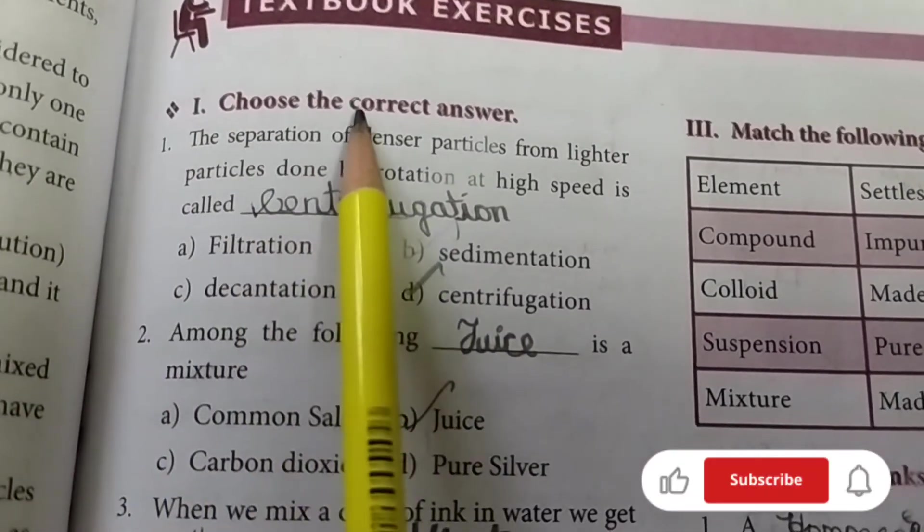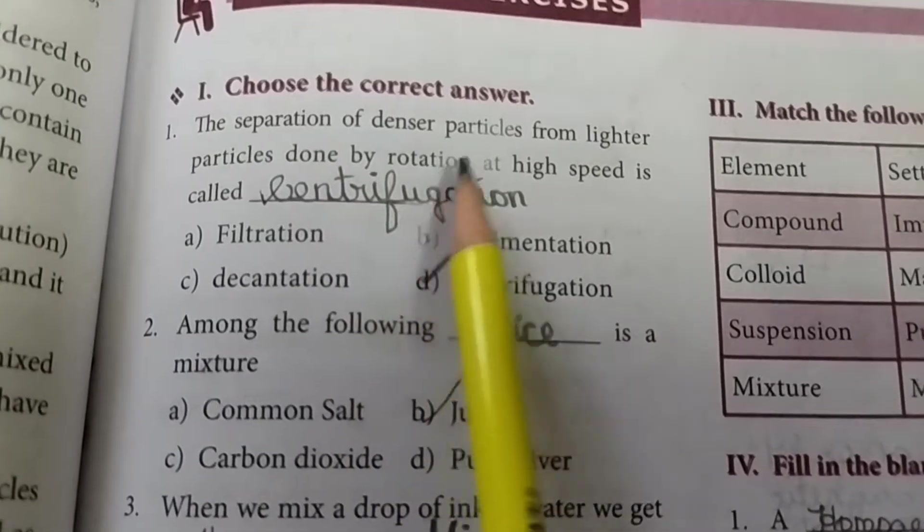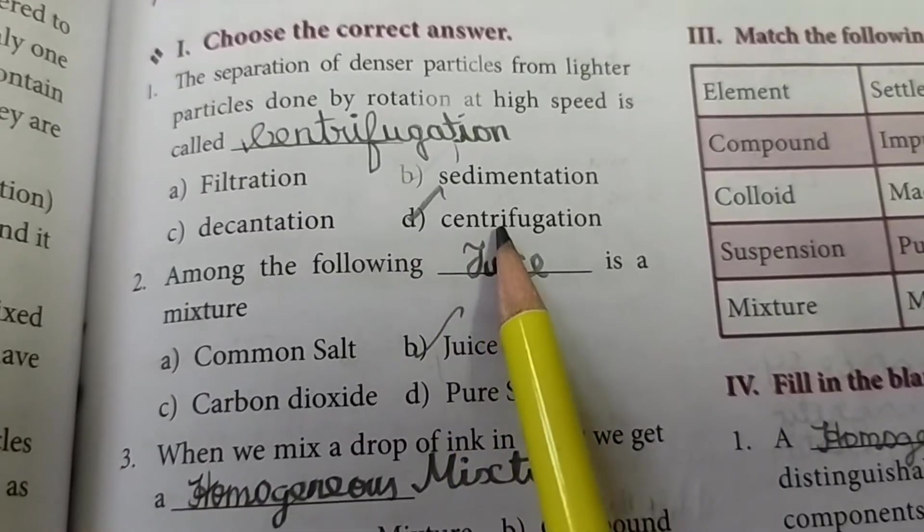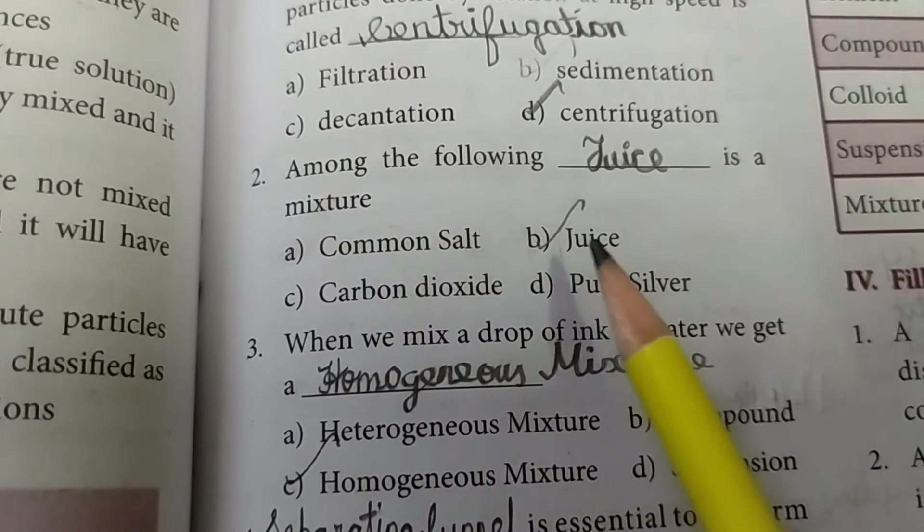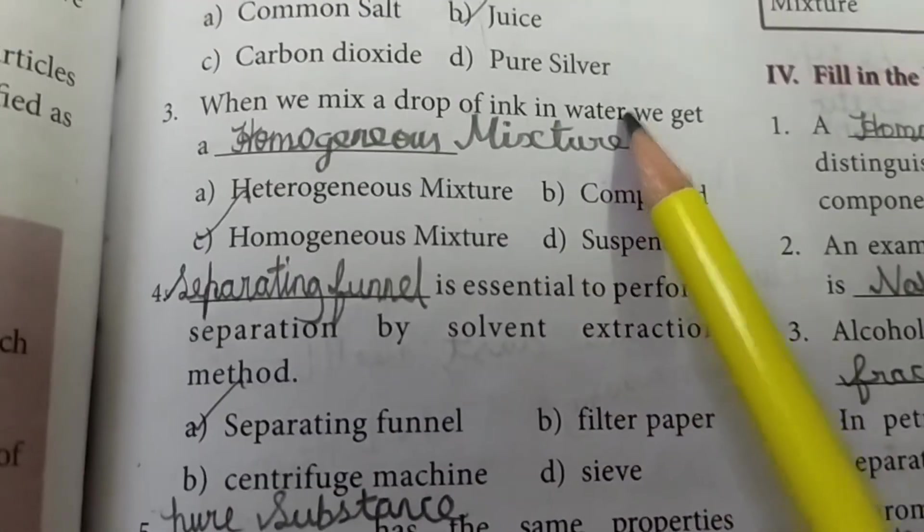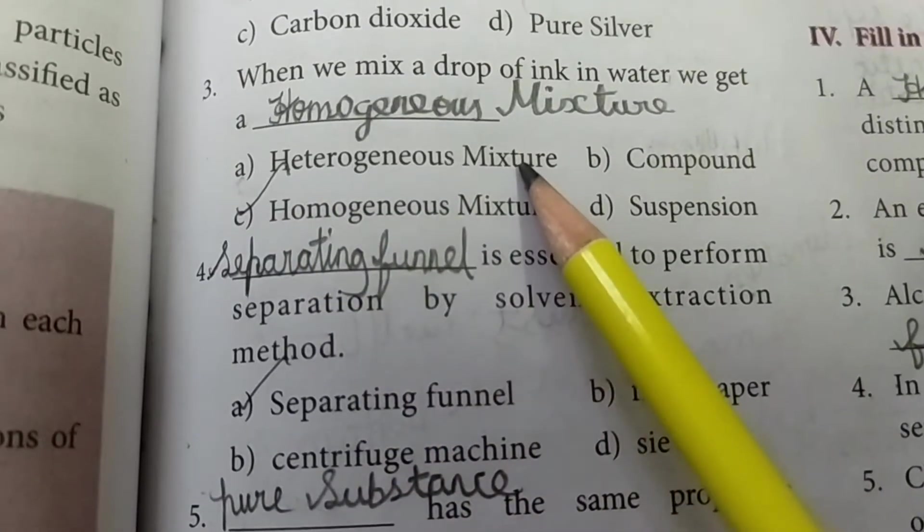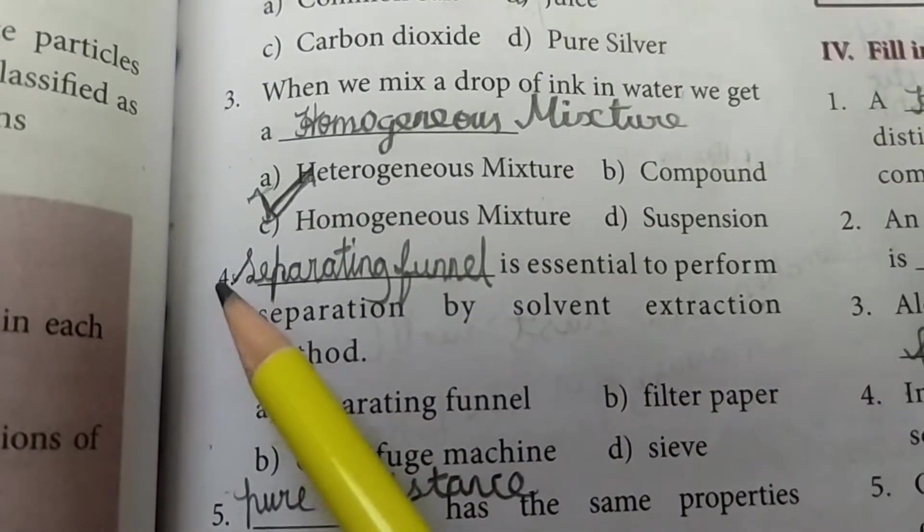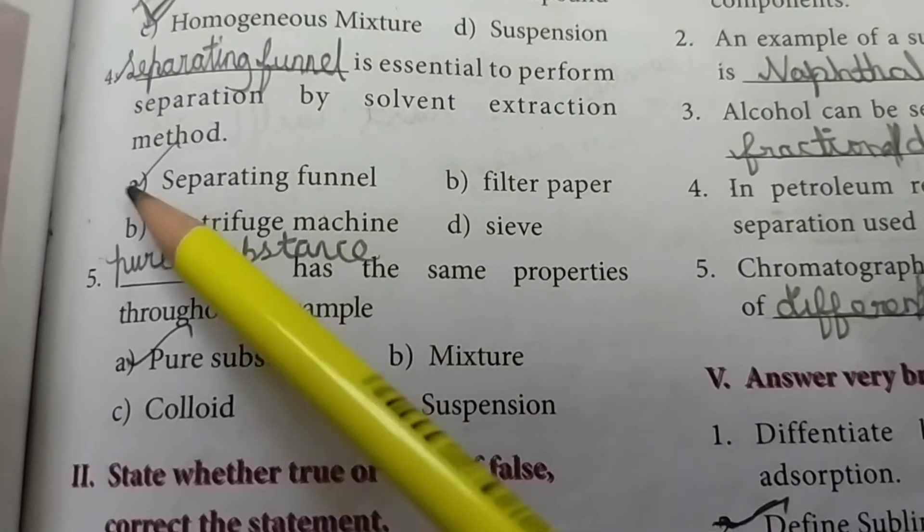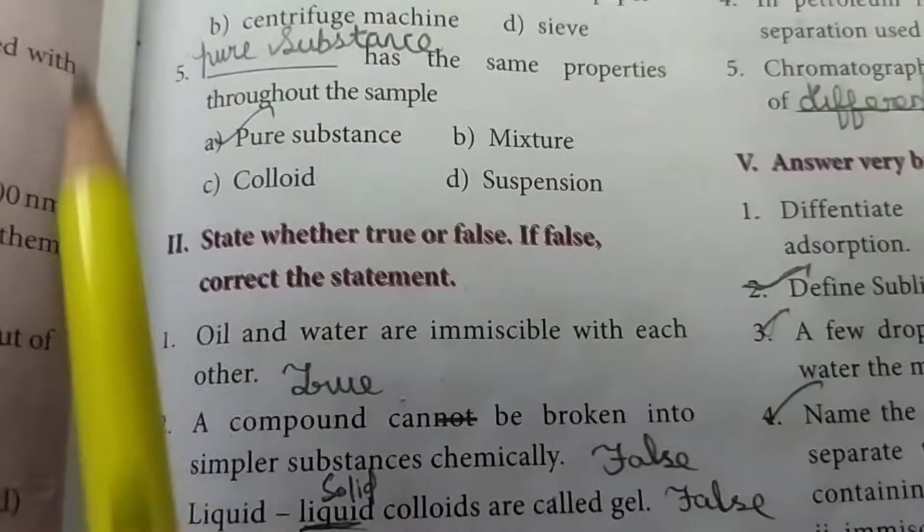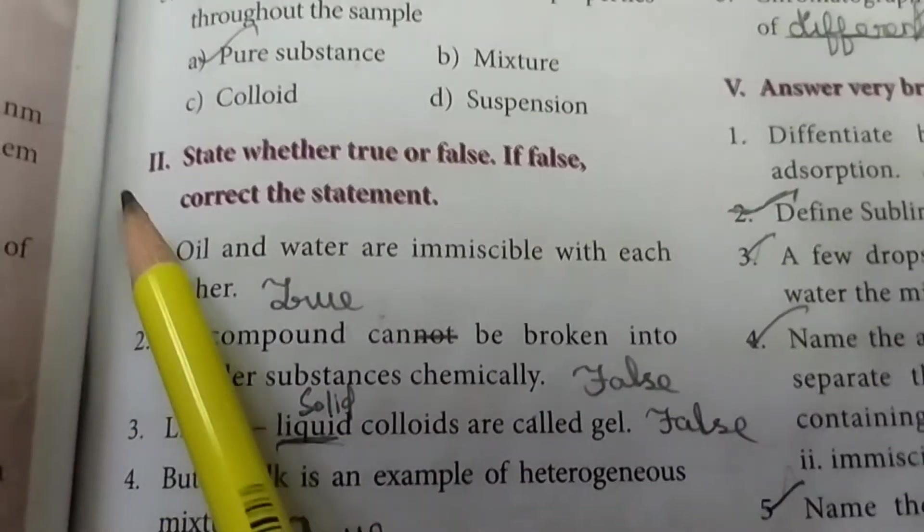First, choose the correct answer. Number 1: The separation of denser particles from lighter particles done by rotation at high speed is called centrifugation. Second, among the following, juice is a mixture. Third, when we mix a drop of ink in water we get a homogeneous mixture. Fourth, separating funnel is essential to perform separation by solvent extraction method. Fifth, pure substance has the same properties throughout the sample.